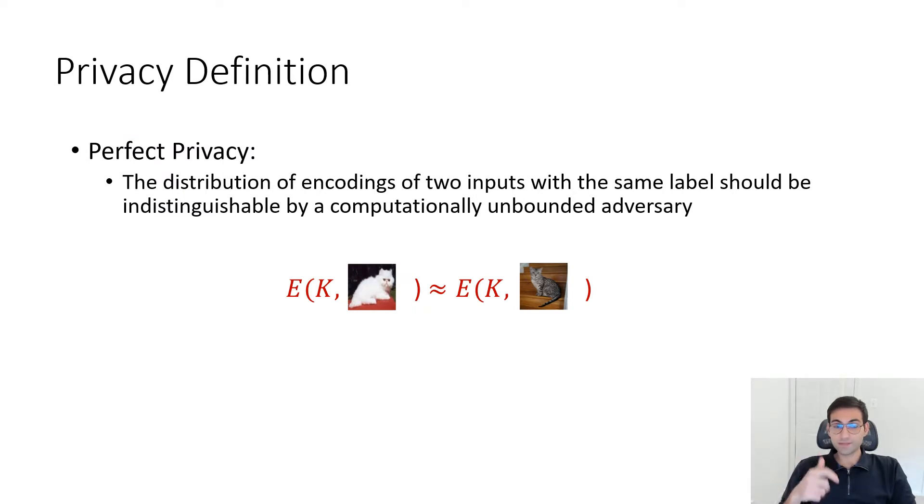They define this notion of perfect privacy for a keyed encoding function. We call an encoding function perfectly private if for any two instances with the same label, the output distribution of the encoding is almost the same when you sample the key freshly from your key generation algorithm. Almost the same means it should be indistinguishable by a computationally unbounded adversary. For example, if I feed the encoding function with two different cat images, the distribution of encodings should be identical for any two cat images.